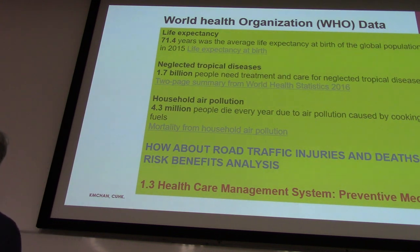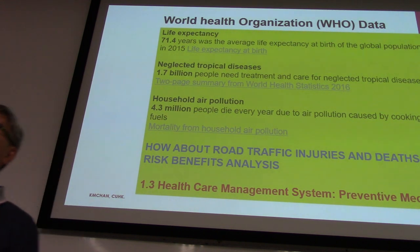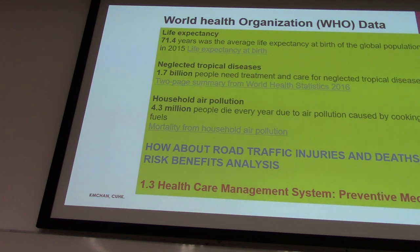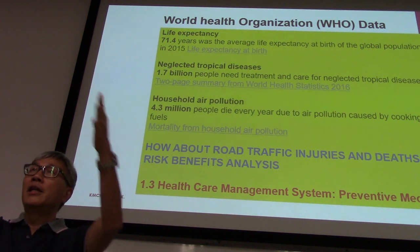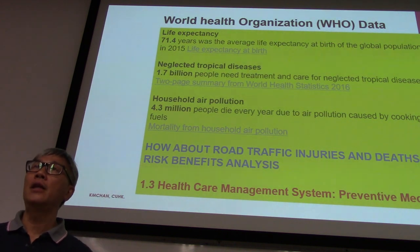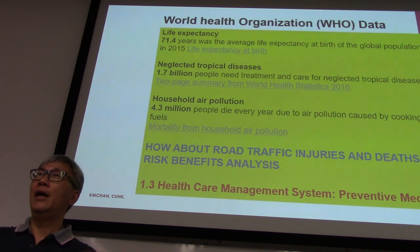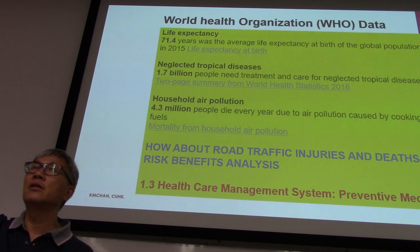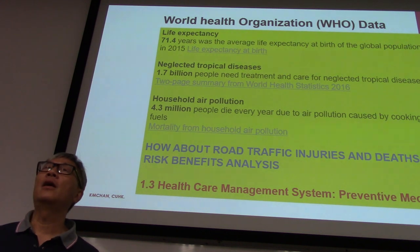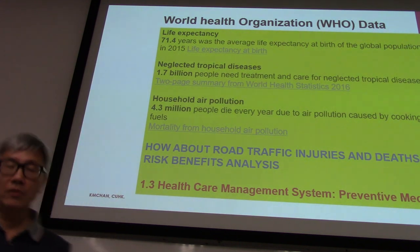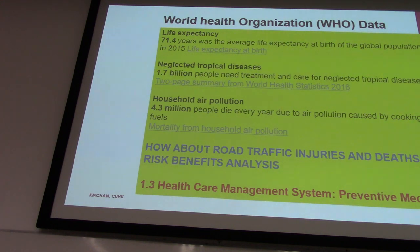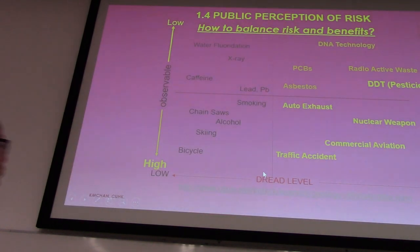For example, char siu barbecue pork contains a lot of benzo[a]pyrene — it's a constant research concern. In Hong Kong, many restaurants now change to a different kind of electric grills instead of charcoal. They hang all the suckling pigs and barbecue items and make them in electric grills instead, because the benefit is huge. But sometimes it's very difficult to draw a line.